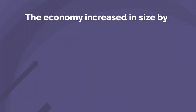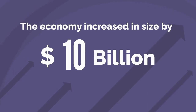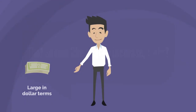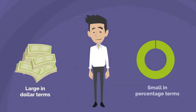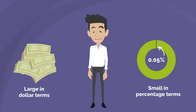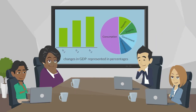Now, let's say the economy increased in size by 10 billion dollars. That seems like a large increase, right? Well, it is large in dollar terms, but in percentage terms, it is 0.05 percent, or five one-hundredths of one percent. That's very small. As such, economists generally find it helpful to talk about changes in GDP in terms of percentages.